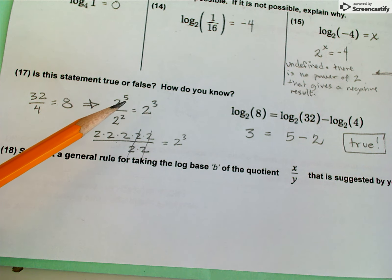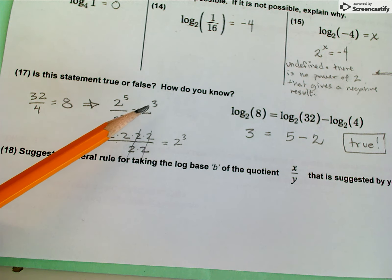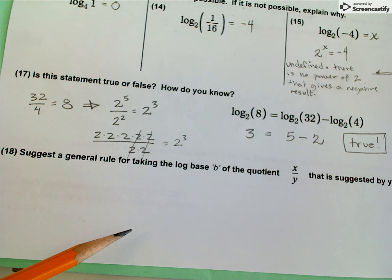Remember, the quotient rule being that 5 minus 2 equals 3. I can subtract these exponents to get this one.